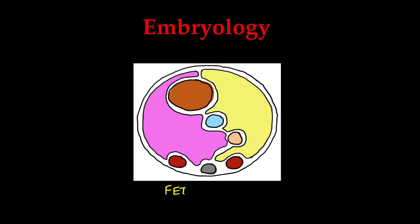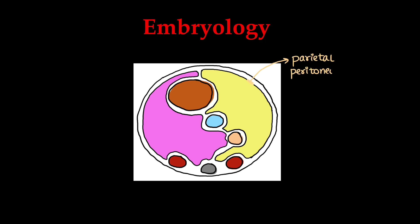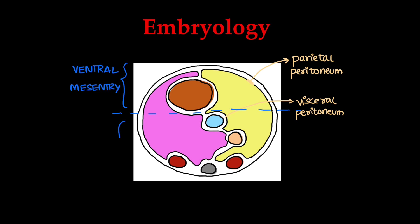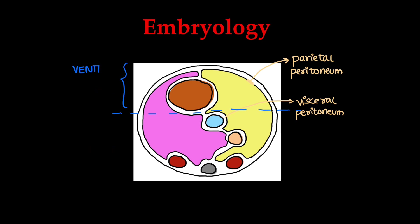Coming to the embryology, this is the abdomen of a fetus at 10 weeks. We will see the peritoneum and mesentery. Mesentery is a double fold of peritoneum opposed to each other. The parietal peritoneum lines the abdominal wall and the visceral peritoneum lines the abdominal organs. The peritoneum has multiple derivatives: the ventral mesentery and the dorsal mesentery, both of which have their own derivatives.